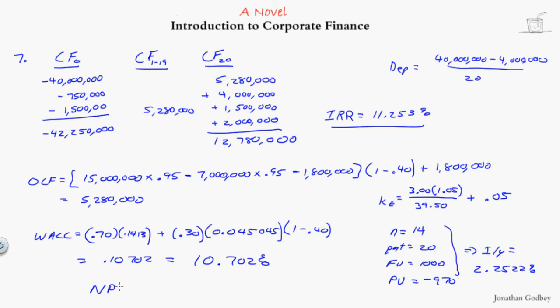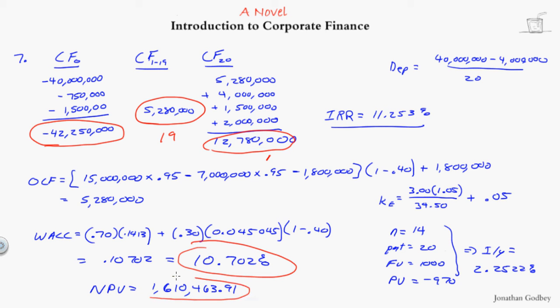And the net present value is going to be $1,610,463.91. We do the project because this is positive. So again, to get this net present value, this is cash flow 0. Cash flow 1 happens 19 times. Cash flow 2 happens once. Put in your weighted average cost of capital. Then you can compute your net present value. Look on page 183 to go through those steps on the calculator. And given these cash flows, you can compute this internal rate of return.